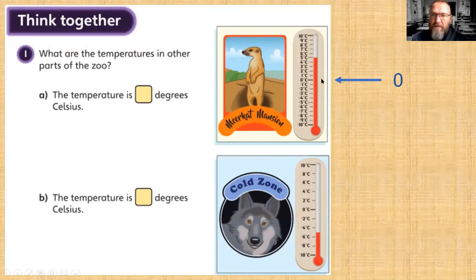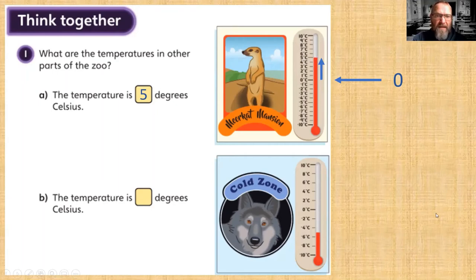We start our reading from zero. This is a positive temperature, so we count up: one, two, three, four, five. You can see the temperature is exactly on five degrees Celsius.